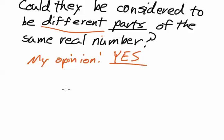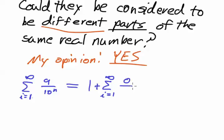And the same thing with 1. The lower half of 1 could be expressed as the sum from i equals 1 to infinity of 9 over 10 to the nth. While 1 can be expressed as 1 plus the sum from i equals 1 to infinity of 0 over 10 to the nth.